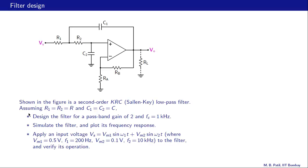Now assuming R1 equal to R2 equal to R and C1 equal to C2 equal to C, design the filter for a passband gain of two and a cutoff frequency of one kilohertz. Simulate the filter and plot its frequency response. In particular, we will check that it is a second order filter with a cutoff frequency of one kilohertz.